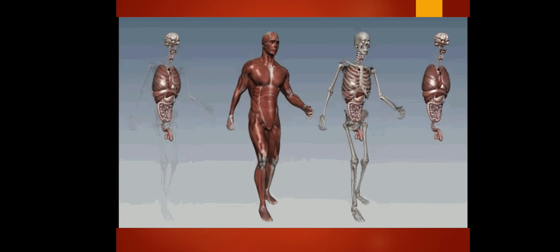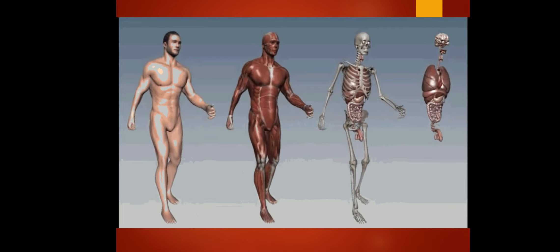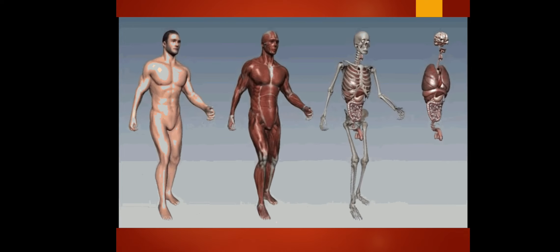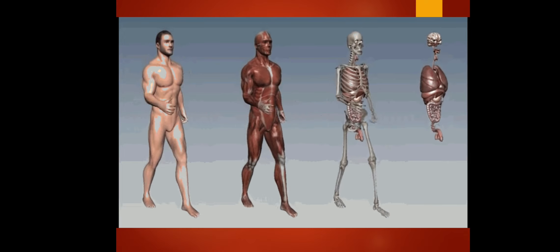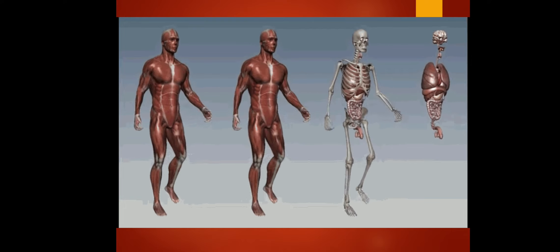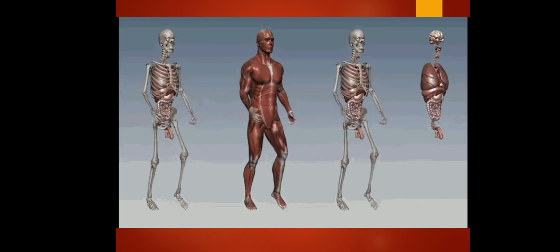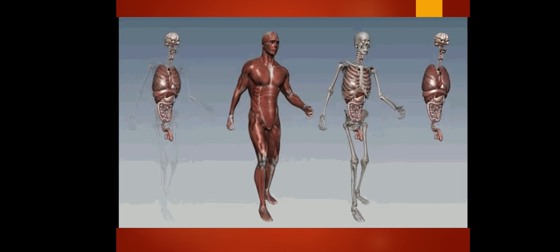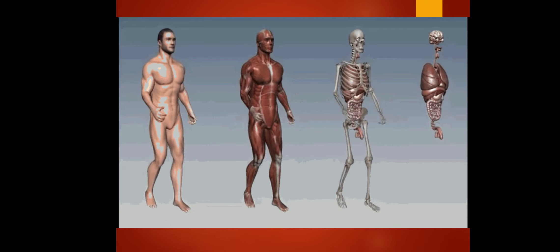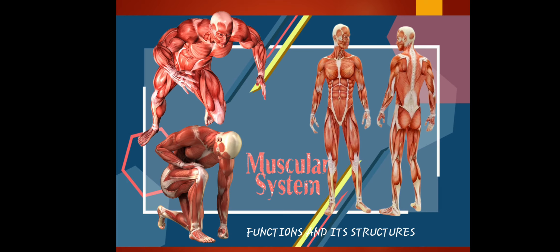This is a good GIF I found. It shows the connection between human internal organs — from bones to muscles, internal organs, and the largest organ, the skin, as well as the muscles themselves. Those were some of the pictures pertaining to our topic.